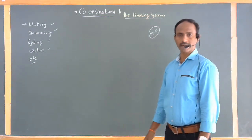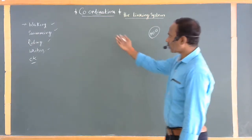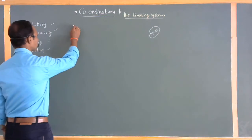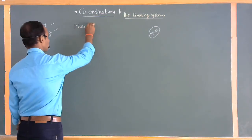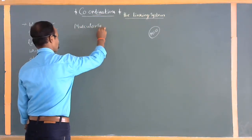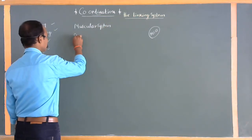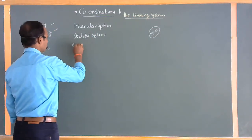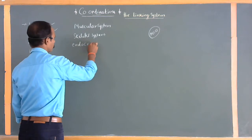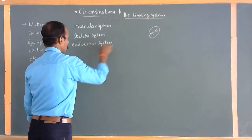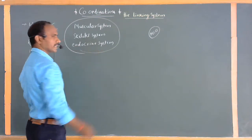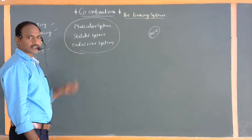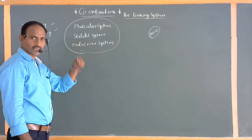To perform a particular task, separate systems are involved. These are respectively called the muscular system, skeletal system, and endocrine system. These three kinds of systems are coordinated with each other to achieve coordination in the body.